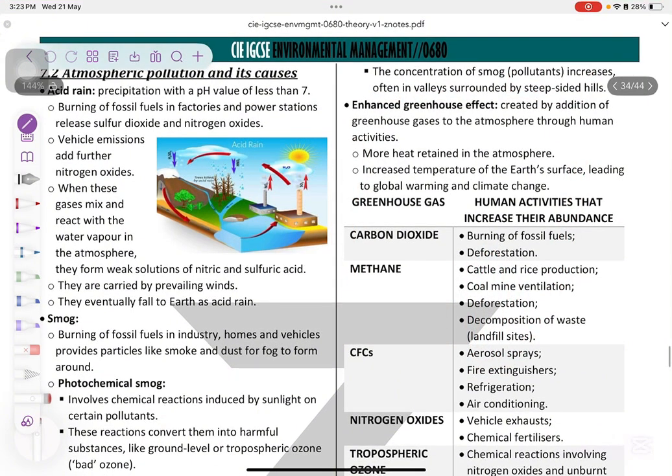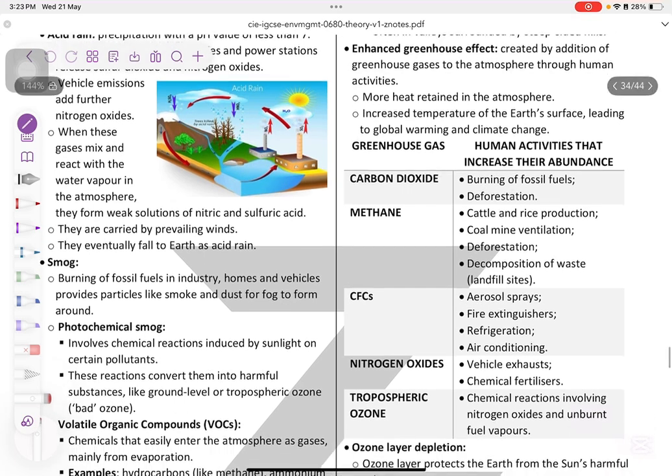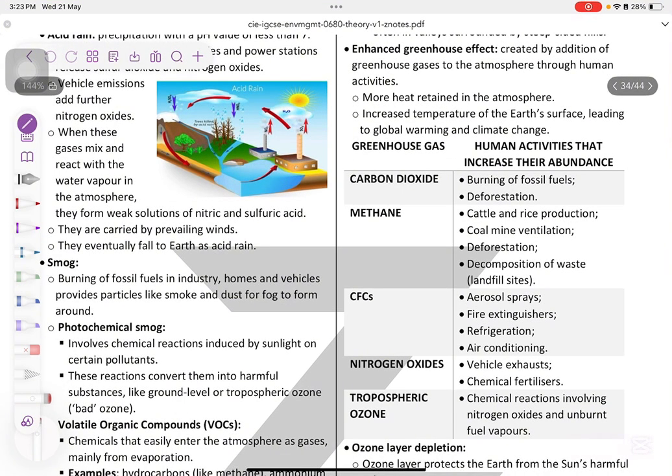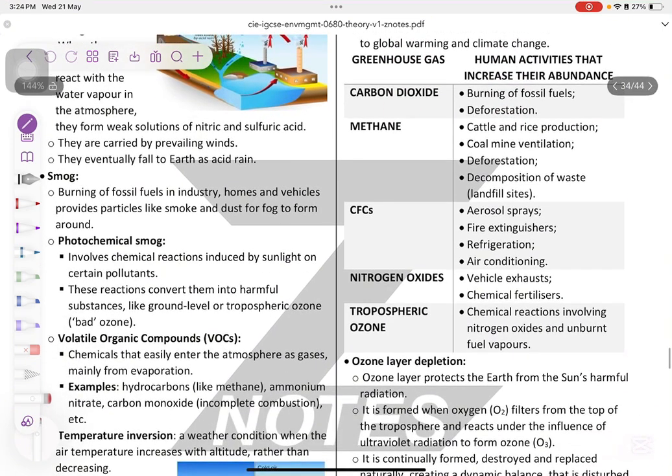Enhanced greenhouse effect: it's created by addition of greenhouse gases in the atmosphere more than the normal due to the human activities, like burning, like combustion. More heat are retained in the atmosphere, increased temperature of the earth's surface leading to global warming and climate change. Greenhouse gas, you got carbon dioxide, methane, CFCs, nitrogen oxides and troposphere ozone. You have to know the human activities that cause each one of them.